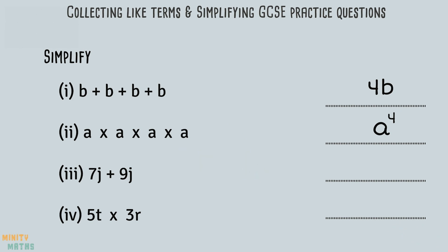For question three, we are asked to simplify 7j plus 9j. These terms are the same because the variables are both j, we can simply add these two terms together. We have 7 lots of j plus 9 lots of j, so in total we have 16 lots of j. We can write this as 16j in its simplest form.